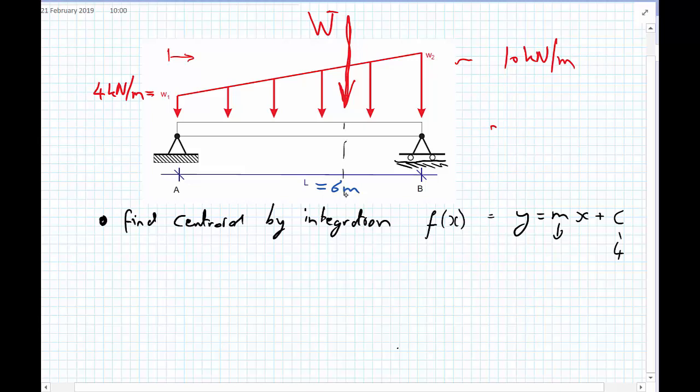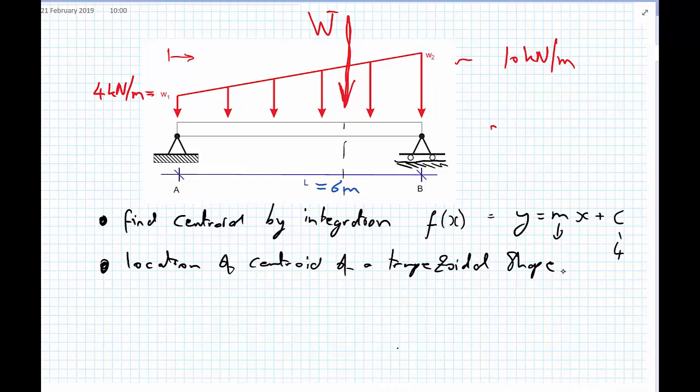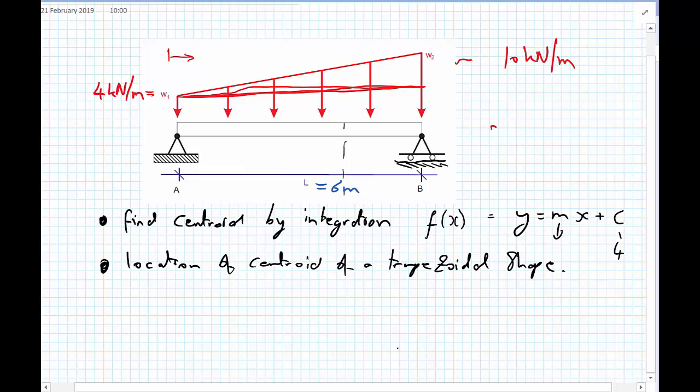The second option we can think of is we could go online and quickly search for the location of the centroid of a trapezoid. If you have access to the internet, you could find that in two minutes. But I'm going to go for a third option here. The third option that I see is I could actually split this load into two distributions: a UDL of 4 kilonewtons per metre and a triangular distributed loading going from 0 here up to 6 at the end of the beam.